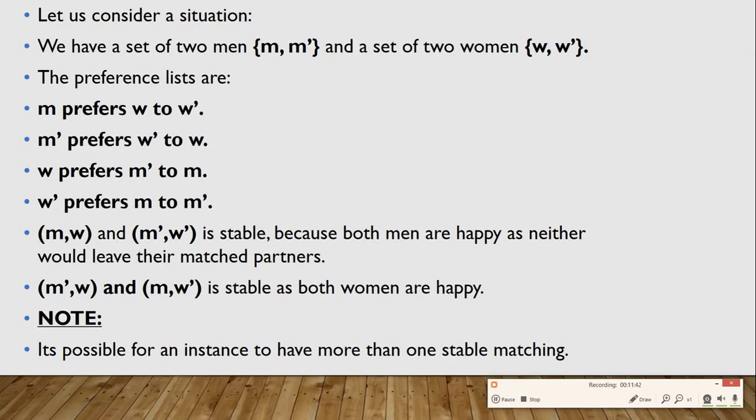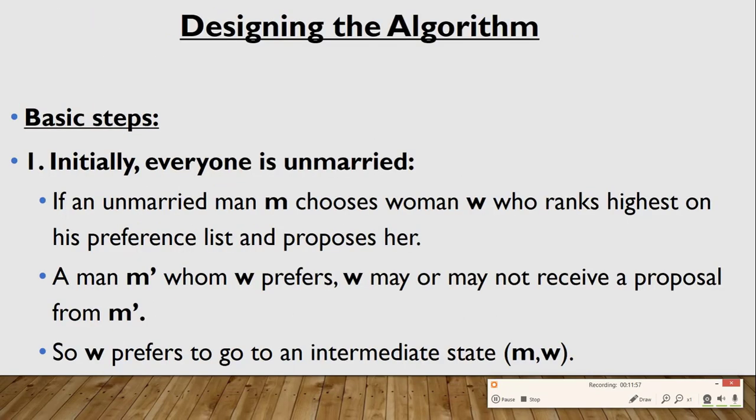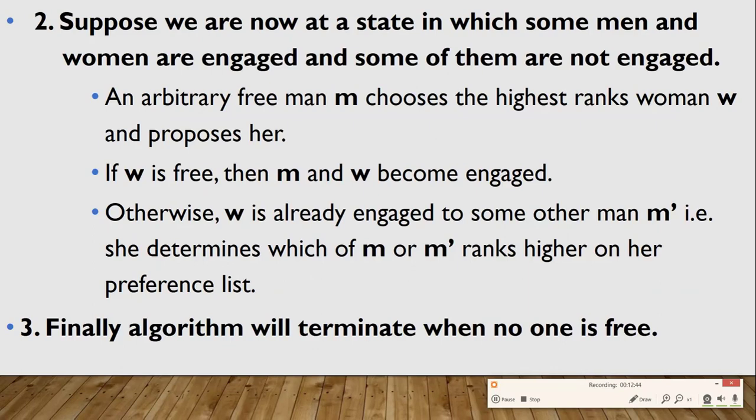This is another example showing how matching works, and it is possible to have more than one instance of a stable matching. Now let us move forward to see how to design the algorithm. Designing the algorithm can be broken into three basic steps: first, consider initially that everyone is unmarried; second, a state in which some men and women are engaged and some are not; and the algorithm terminates when no one is free.